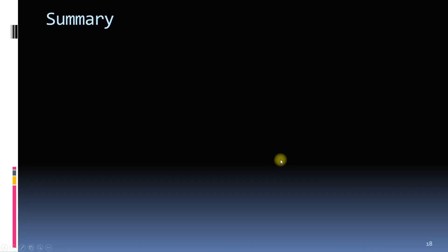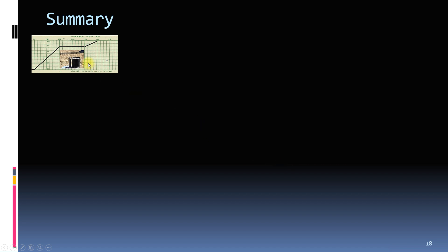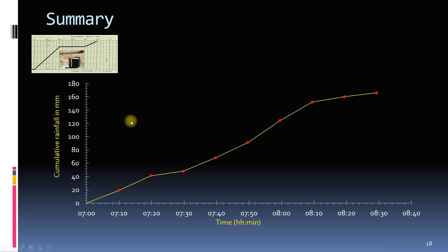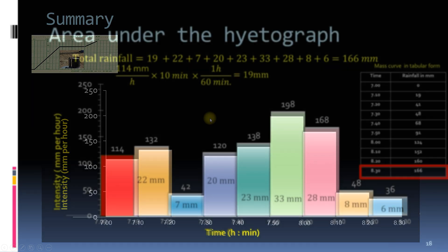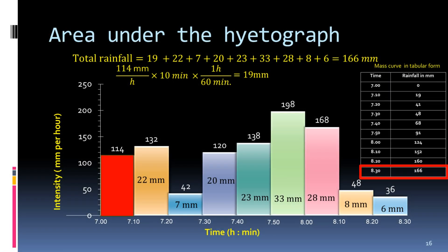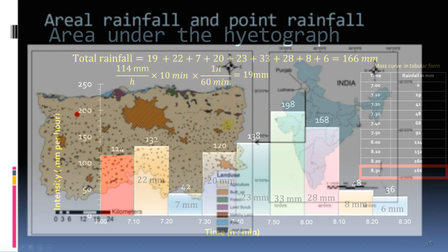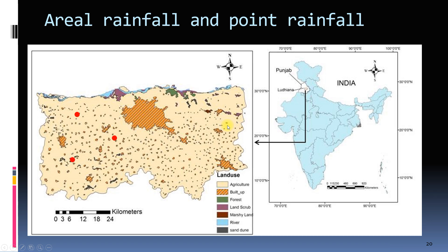Let us summarize what we have done so far. We have seen what a mass curve is and then derived the hydrograph from the mass curve, which is a plot of intensities against time intervals. Then we found the area under the hydrograph. In future videos, we will also find aerial rainfall from point rainfall. Thank you very much.